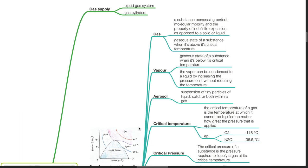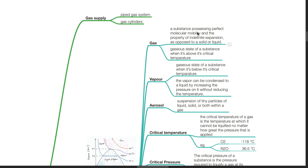Supplementary Information: Gas is a substance possessing perfect molecular mobility and the property of indefinite expansion as opposed to a solid or liquid. Gaseous state of a substance when it's above its critical temperature. Vapour is a gaseous state of a substance when it's below its critical temperature.